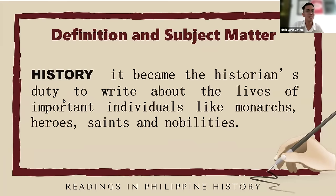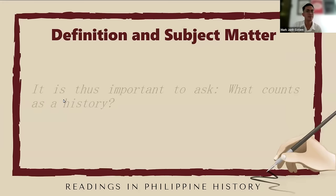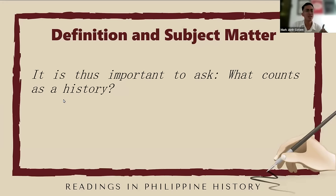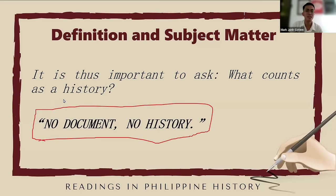Another definition of history is that it became the historian's duty to write about the lives of important individuals like monarchs, heroes, saints, and nobilities. Additionally, history was also focused on writing about wars, revolutions, and other important breakthroughs all over the world. That is why it is important to ask: what counts as history? A traditional historian lives by this mantra: 'No document, no history.' Without written documents or records or other forms of documentation, the events and experiences of the past may be lost or remain unknown.